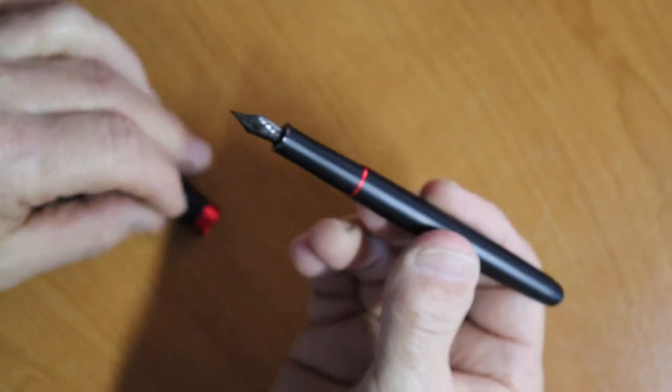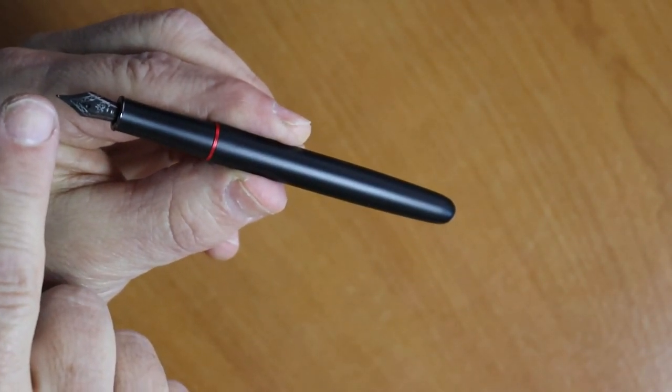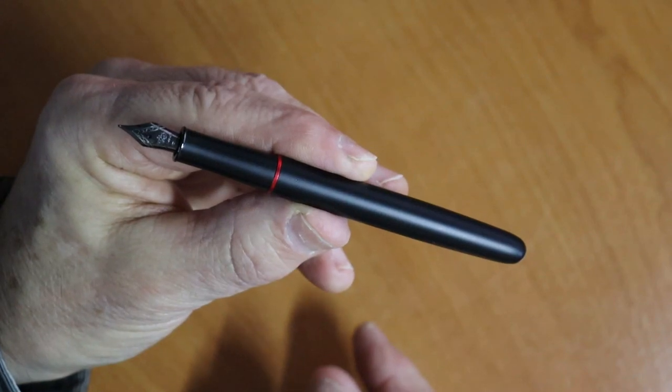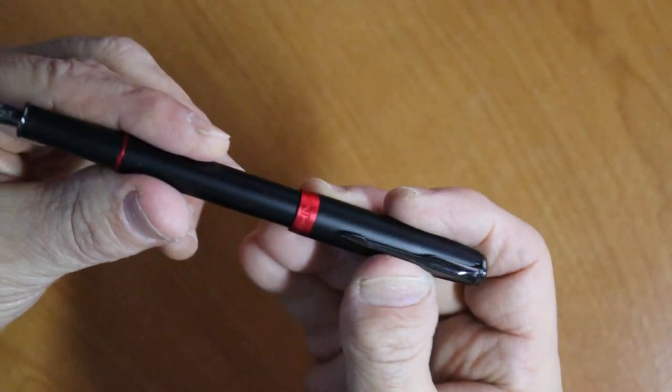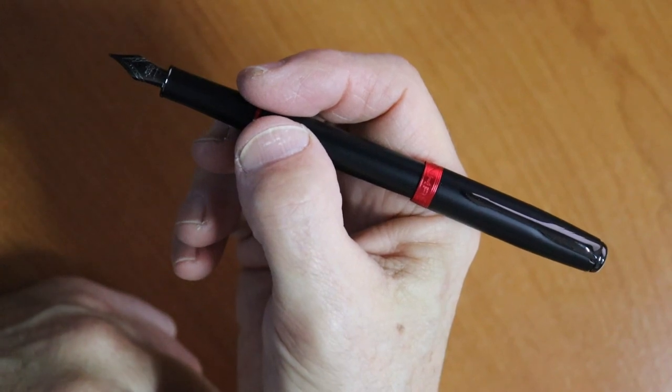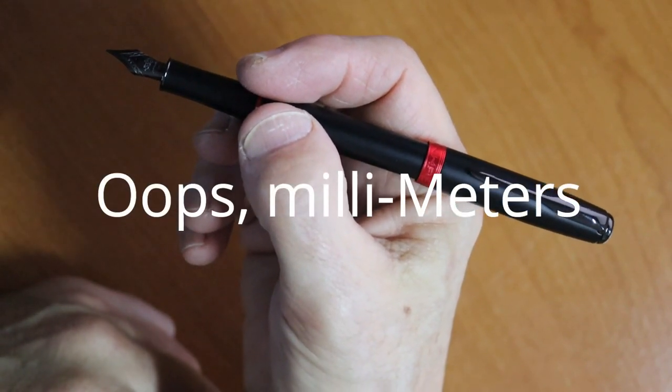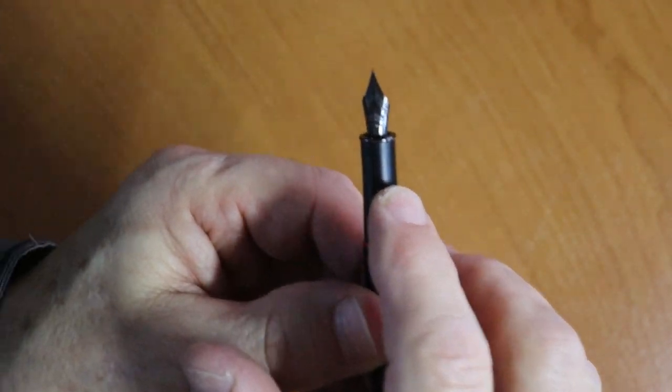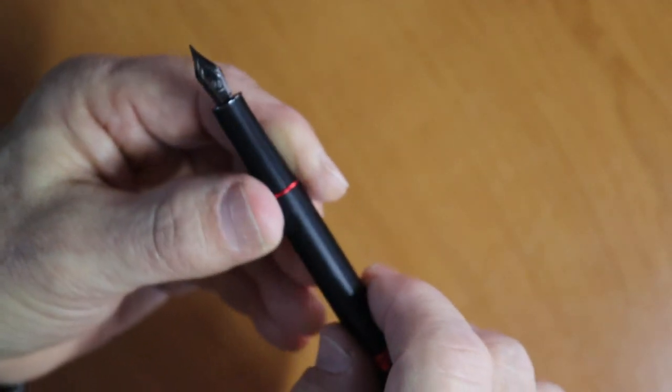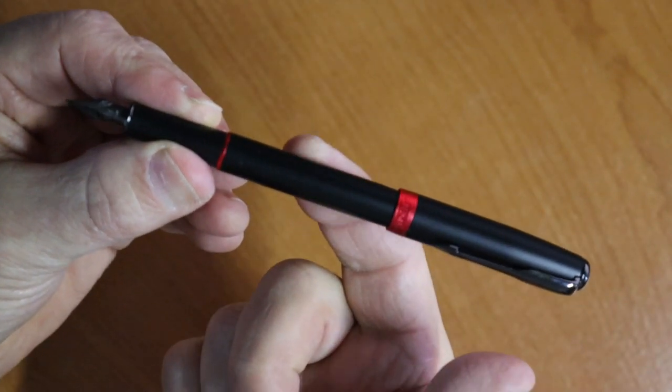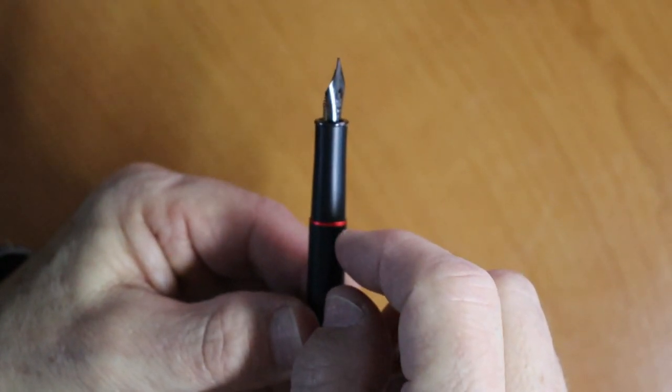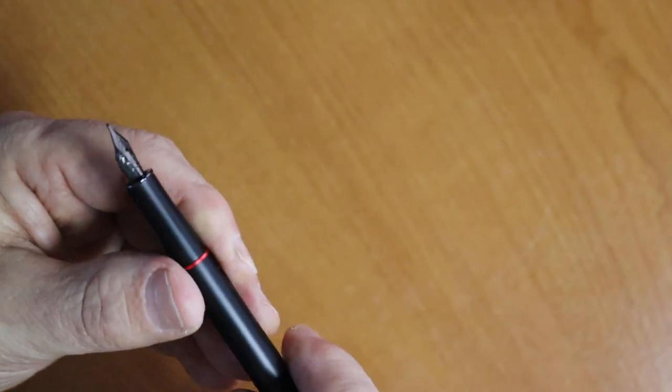Okay, let's talk about length. The body length from nib tip to the finial is 124 millimeters. Capped—and this pen does cap securely—it is 155 millimeters. The grip section up to the middle there is about nine and a half millimeters, the body width is 11 millimeters.